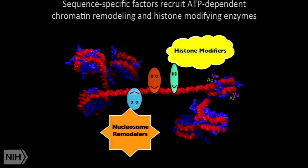If you add up all the proteins that comprise these classes and other related classes of co-regulators, we're coming up to roughly 1,000 or so proteins in the human genome. So we're talking roughly 10 to 15 percent of genetic information is simply devoted to regulating gene expression on a genome-wide basis.